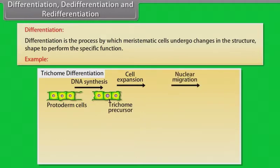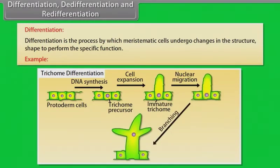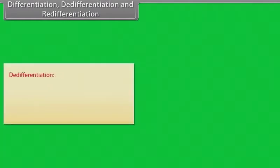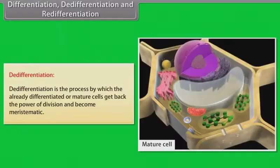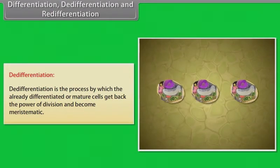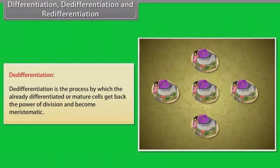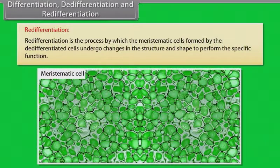Dedifferentiation is the process by which the already differentiated or mature cells get back the power of division and become meristematic. Redifferentiation is the process by which the meristematic cells formed by dedifferentiated cells undergo changes in the structure and shape to perform the specific function.